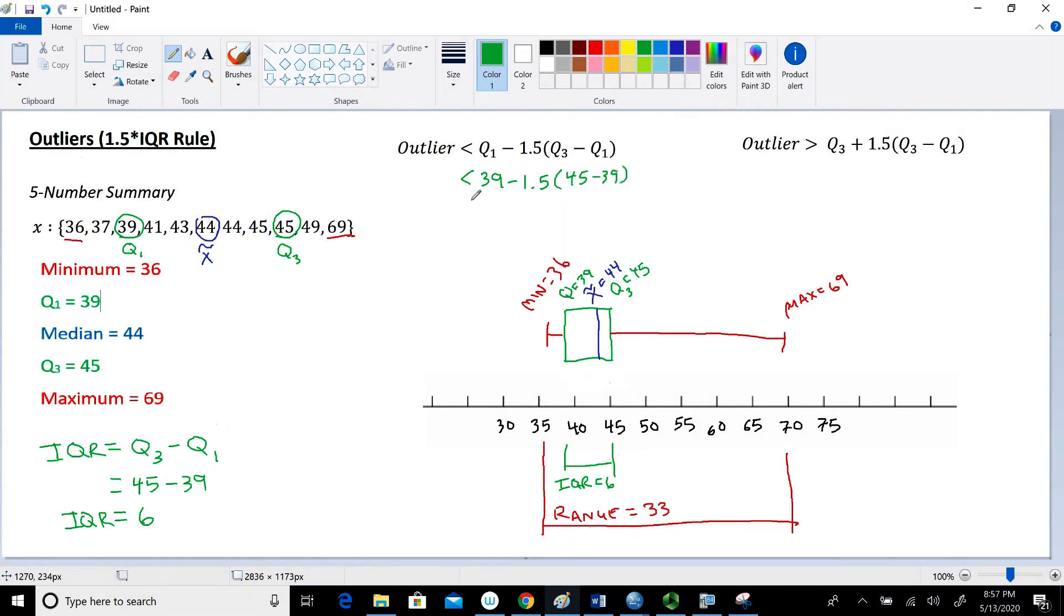And we have to remember order of operations when we do this. We have to do what's in the parentheses first. So 45 minus 39 is 6. That's our IQR. 1.5 times 6 is going to be 9. So this is going to be 39 minus 9. And 39 minus 9 will give us the value of 30. So we have an outlier if we have any values that are less than 30.